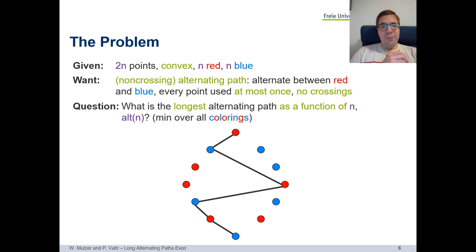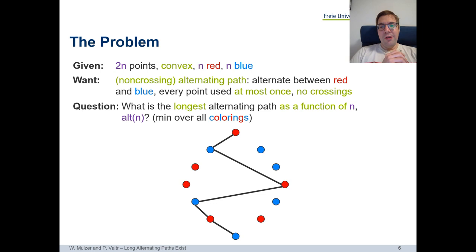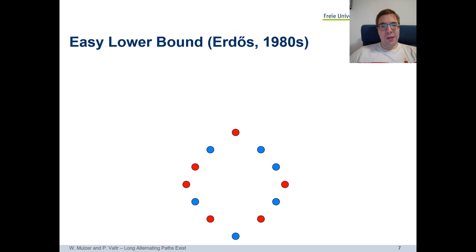This algorithmic question is not so interesting from a research point of view. The question we would like to look at in this talk is the combinatorial question: for any given n, what is the longest alternating path as a function of n, worst case over all colorings? Given any 2n points in convex position with n red and n blue, what is the minimum length of a longest alternating path over all possible colorings? This question turns out to be much more interesting and has been studied for more than 30 years.